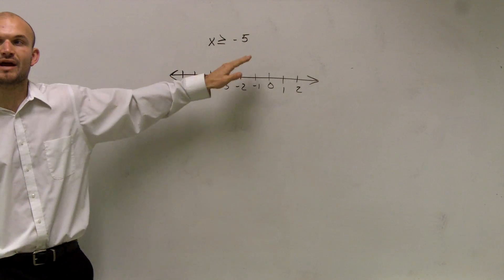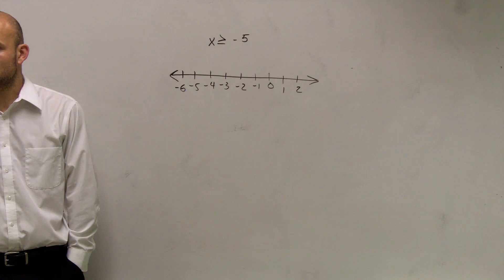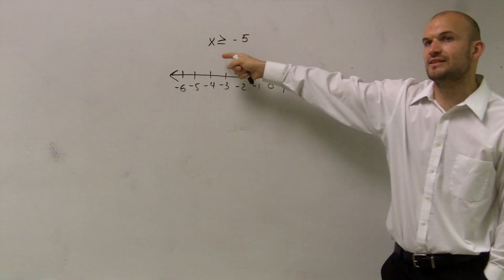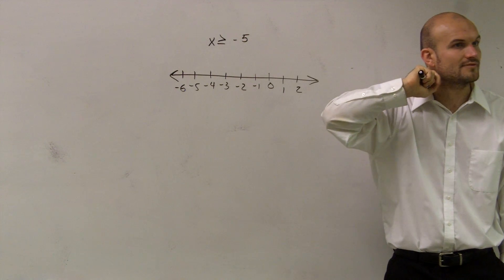So remember, when we're graphing inequalities, one important thing that we need to understand is what the symbols represent. The symbol up here, remember, as I read this, this says x is greater than or equal to negative 5, alright?